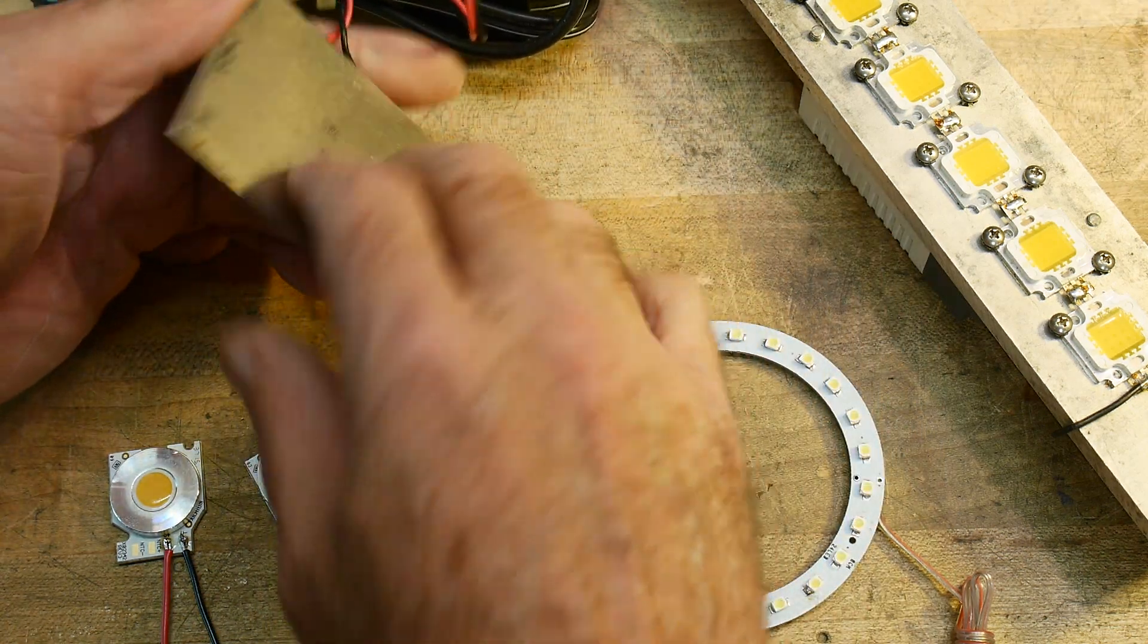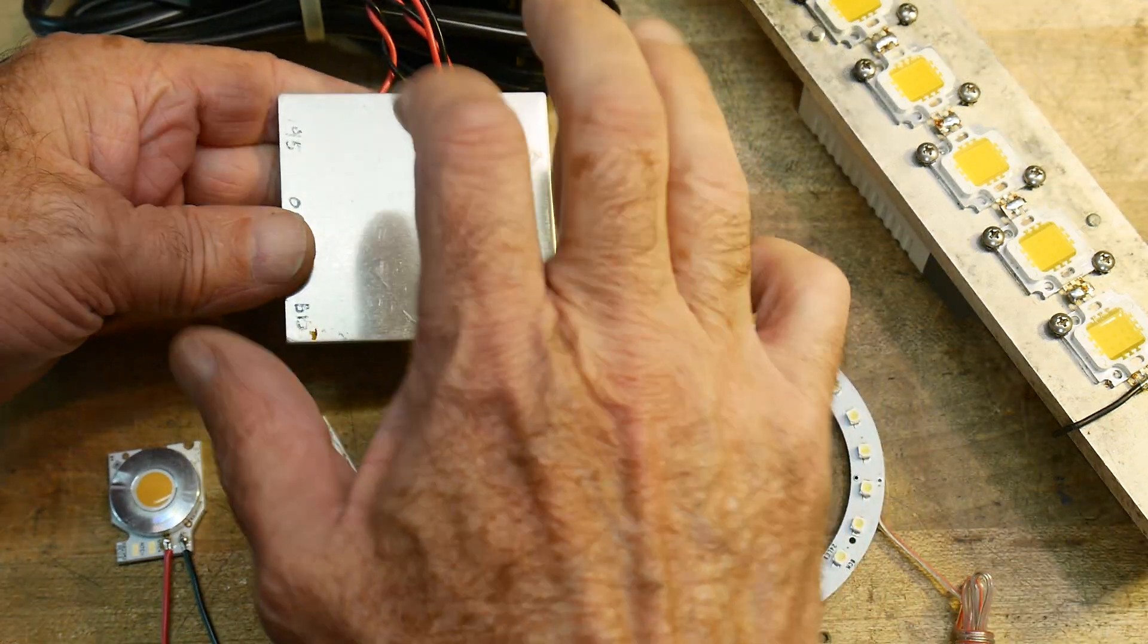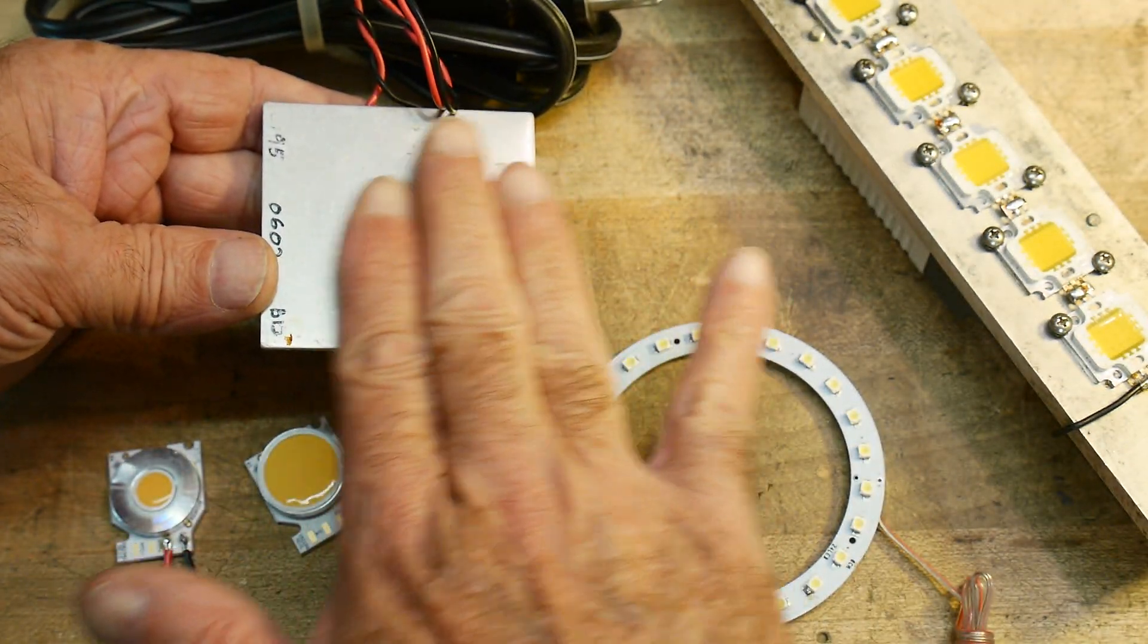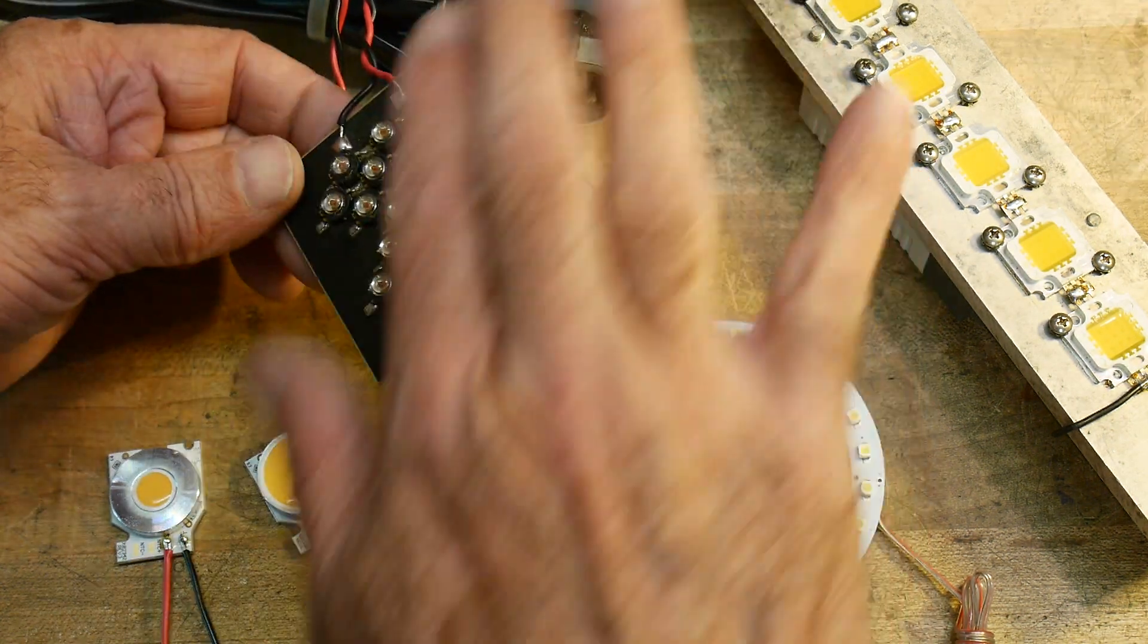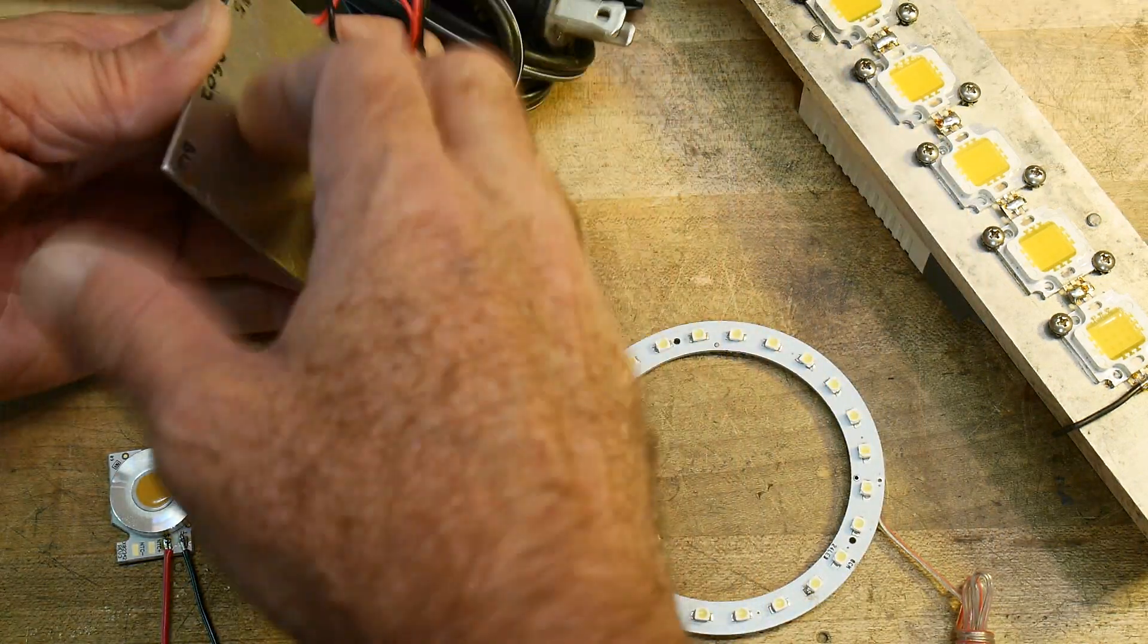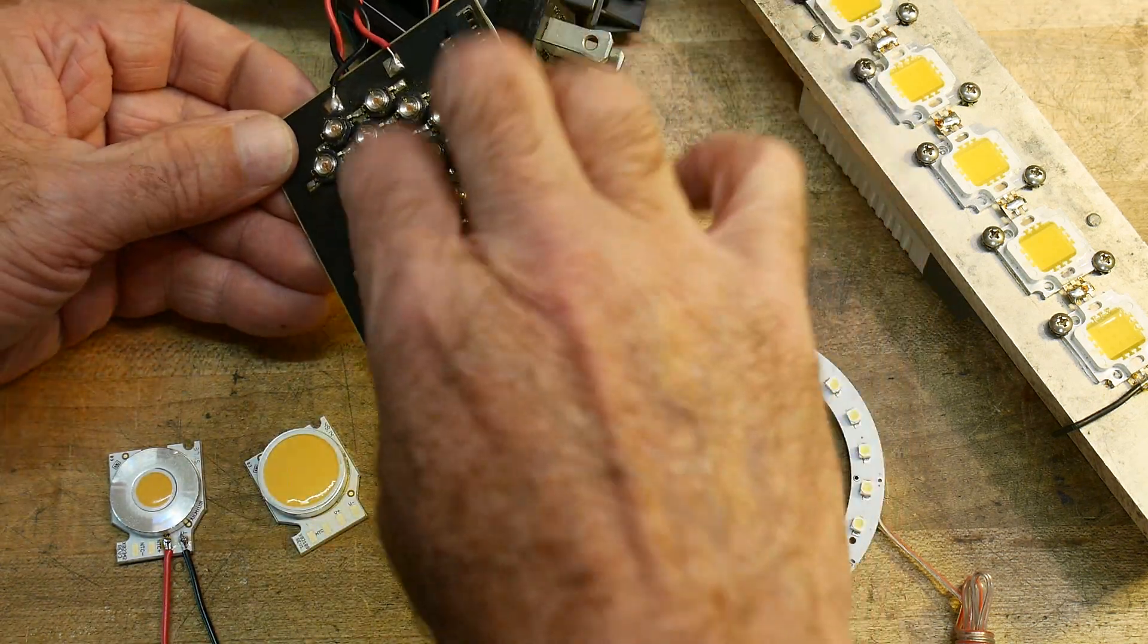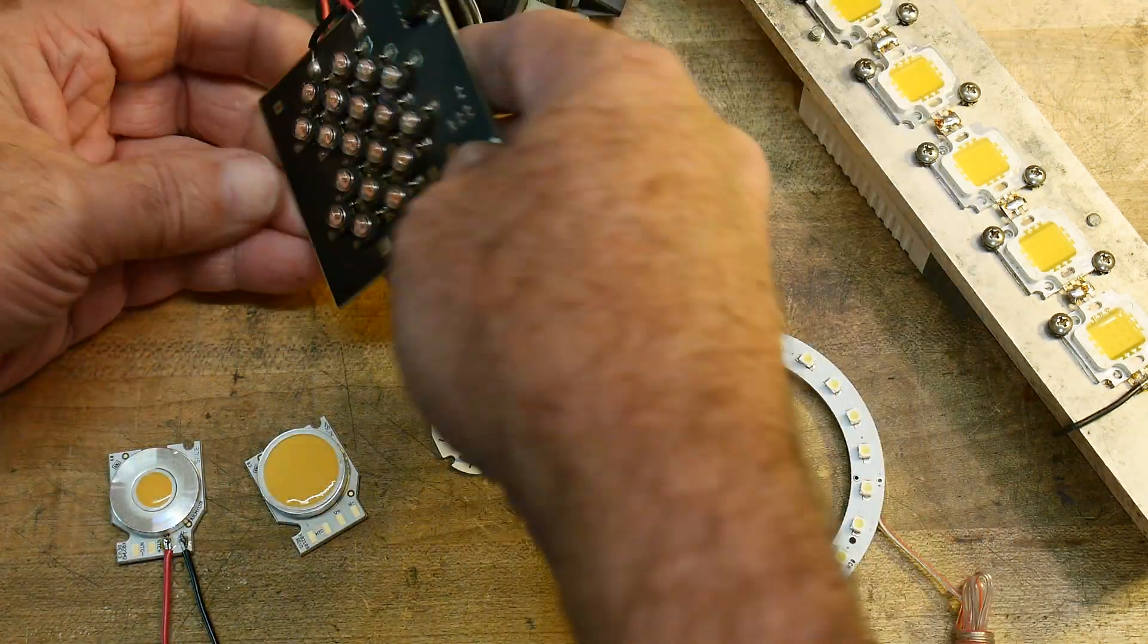And the PC board can be a regular FR4 fiberglass. A lot of times they'll use aluminum PC board. So there's actually an aluminum layer and then a very thin PC board that's adhered to this piece of metal and allows a really good heat sink capability. If this unit gets hot, then you can put a heat sink on the back of this and it'll extract the heat.